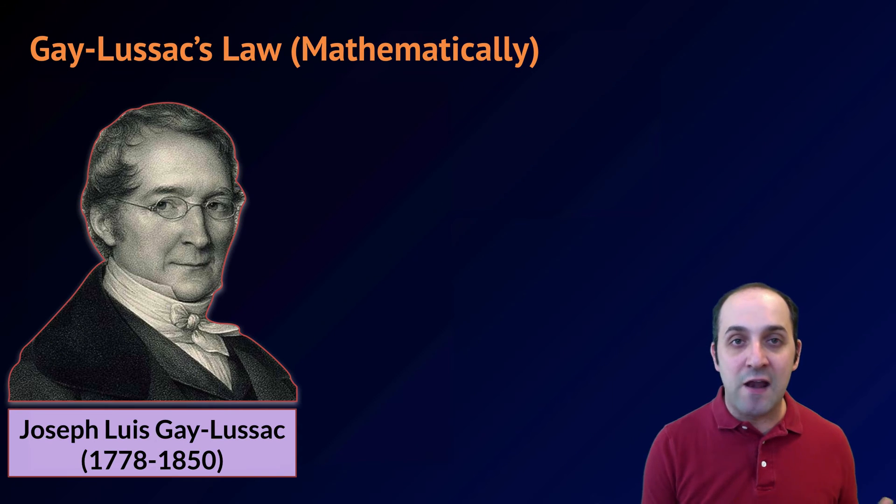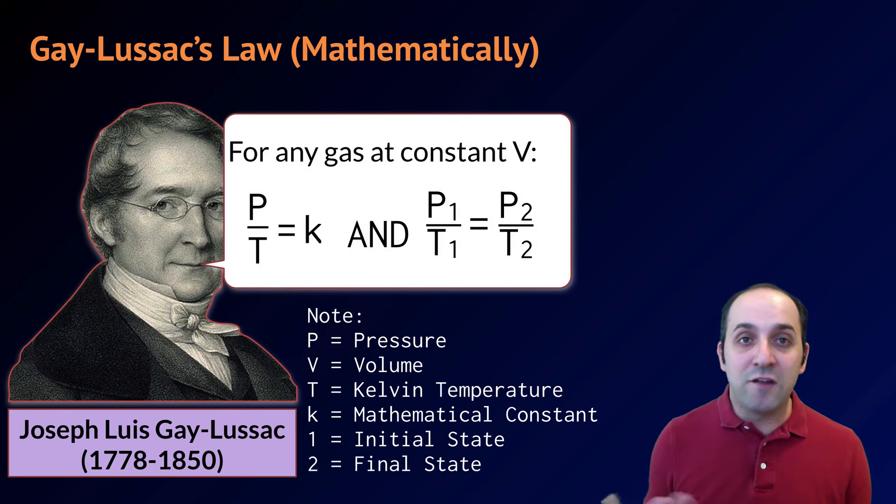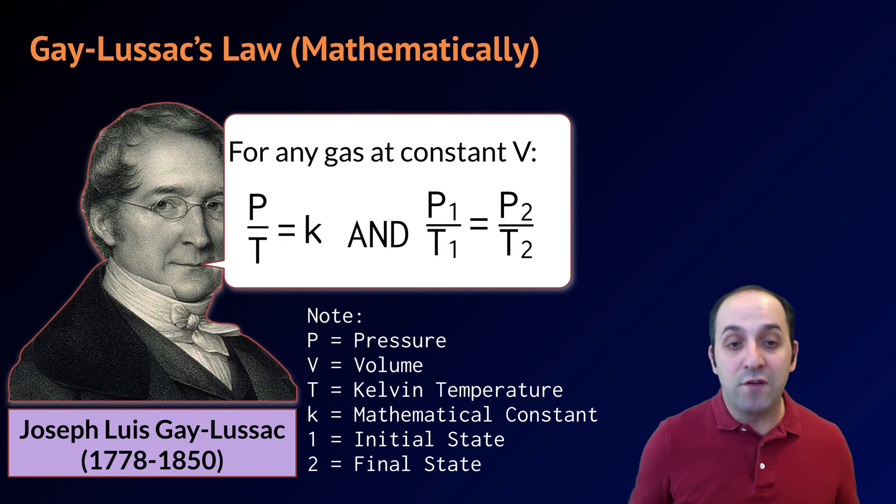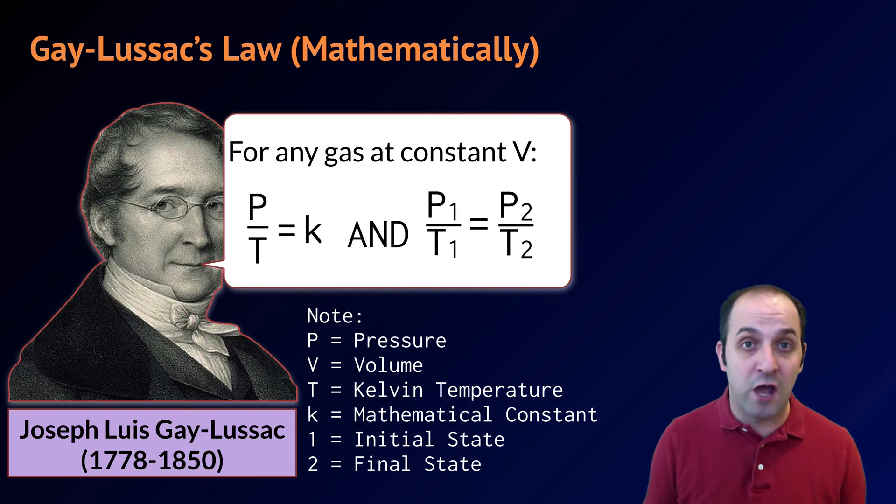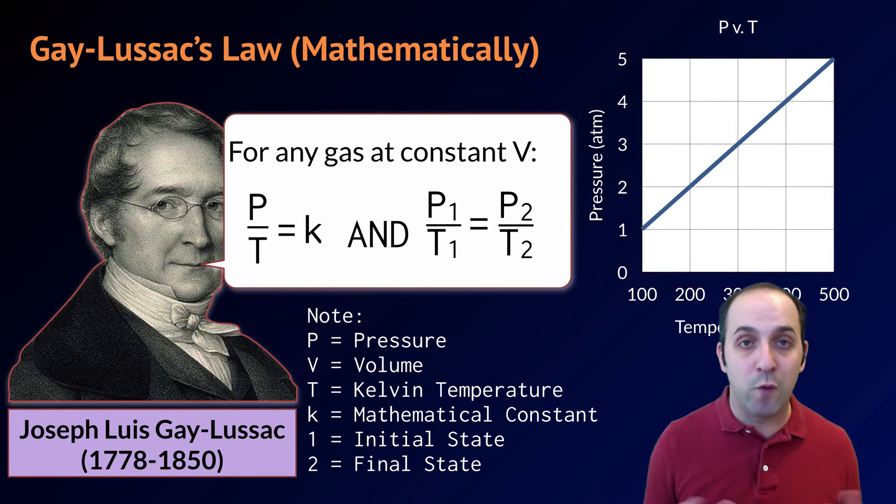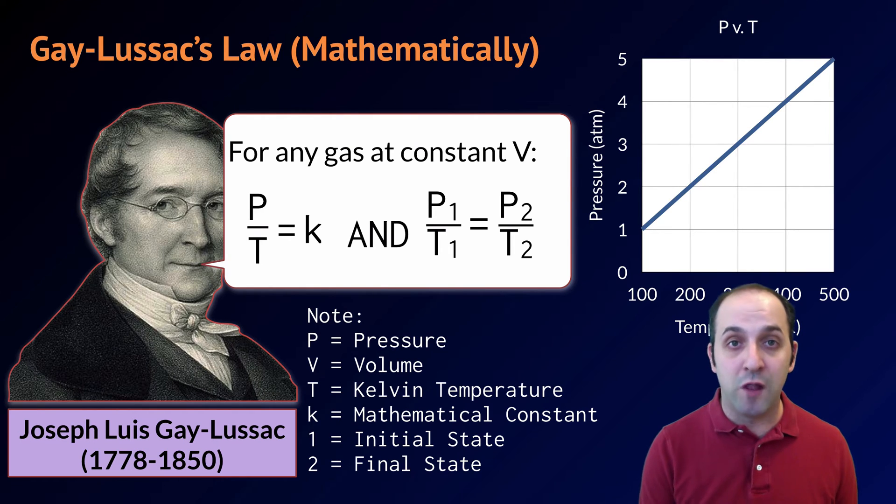Mathematically, Gay-Lussac's law can be stated as follows. For any gas at constant volume, the pressure divided by the Kelvin temperature is equal to a constant value. This also means that the initial pressure divided by the initial Kelvin temperature is going to equal the final pressure divided by the final Kelvin temperature. Mathematically, this is also a direct relationship, similar to Charles's law, and so graphing it will get the characteristic straight sloped line.